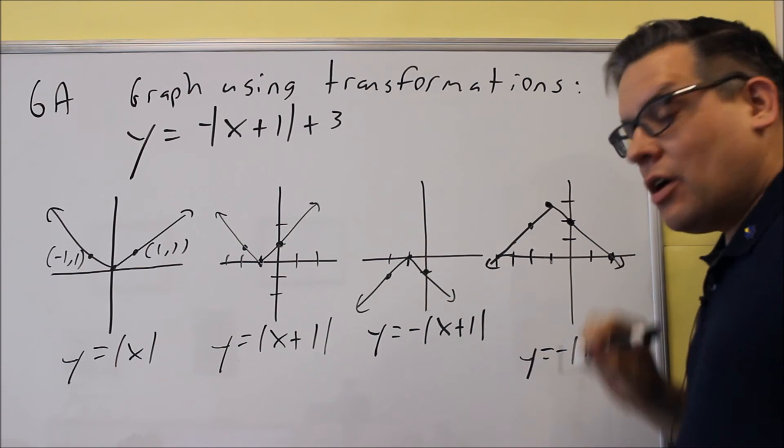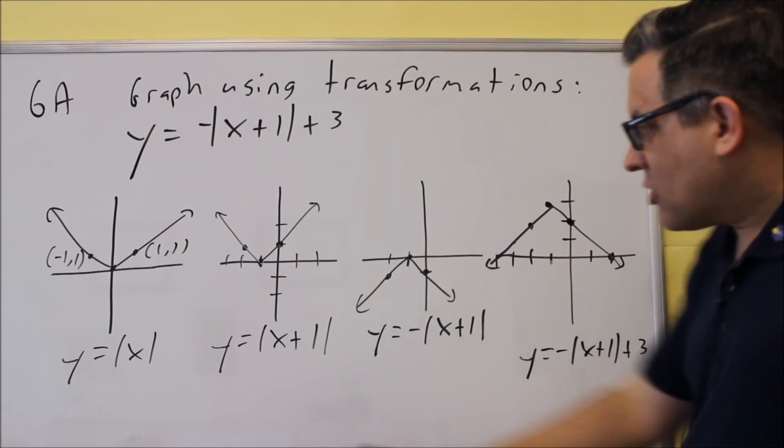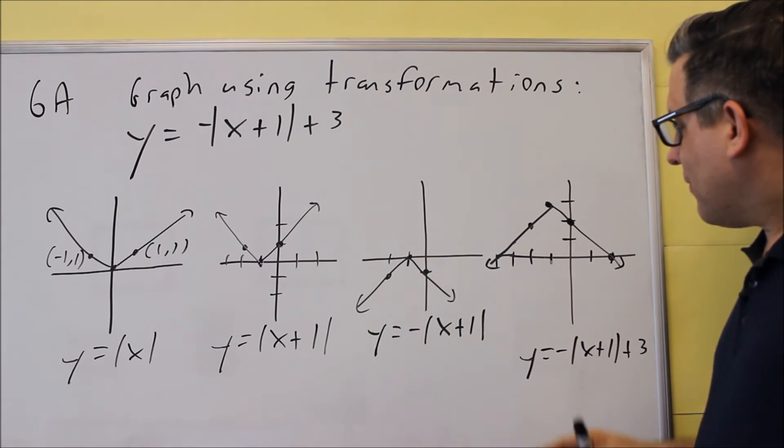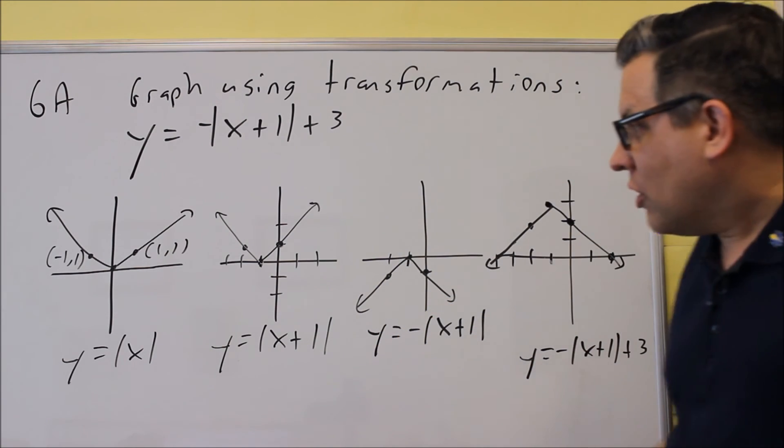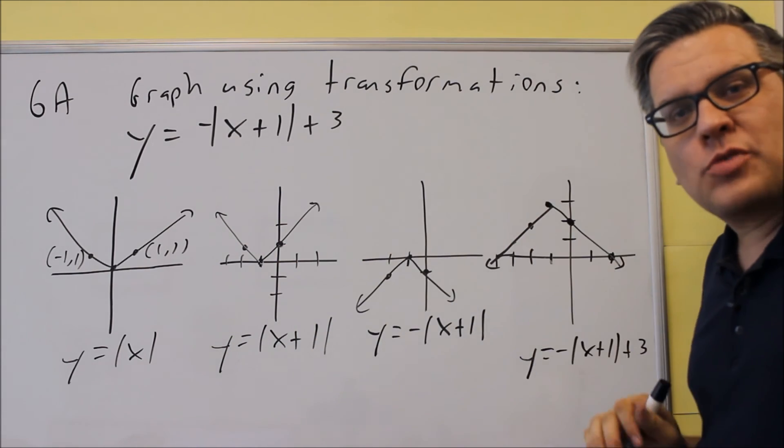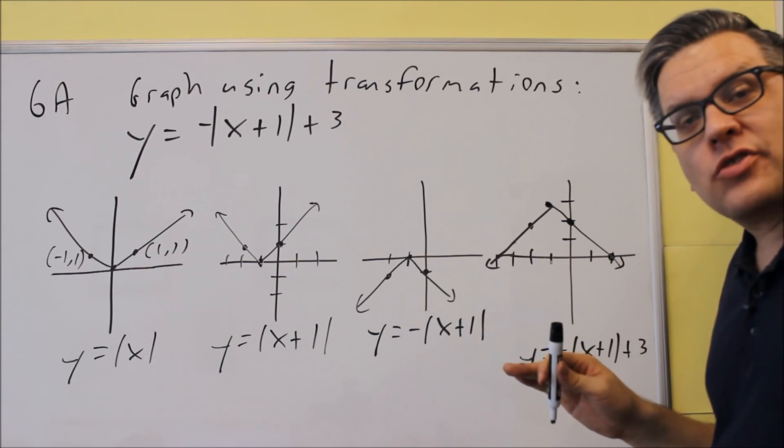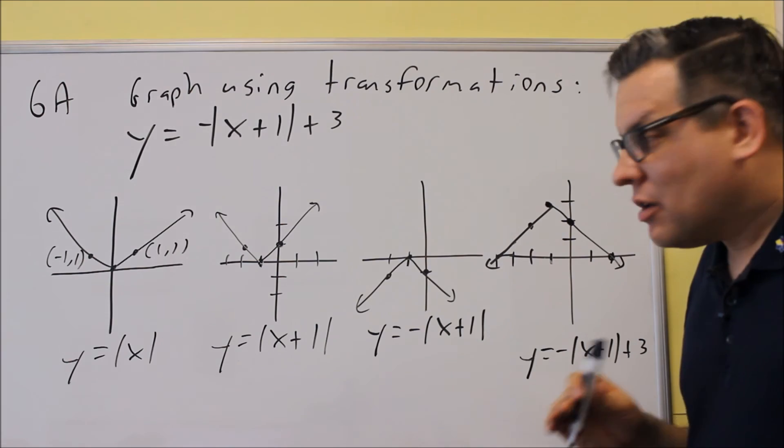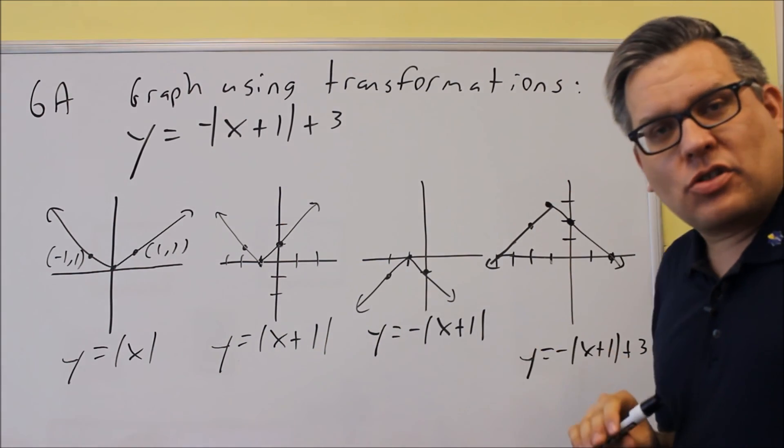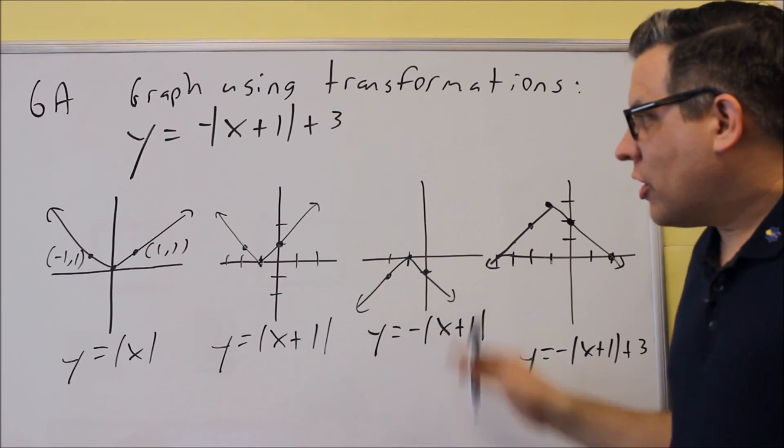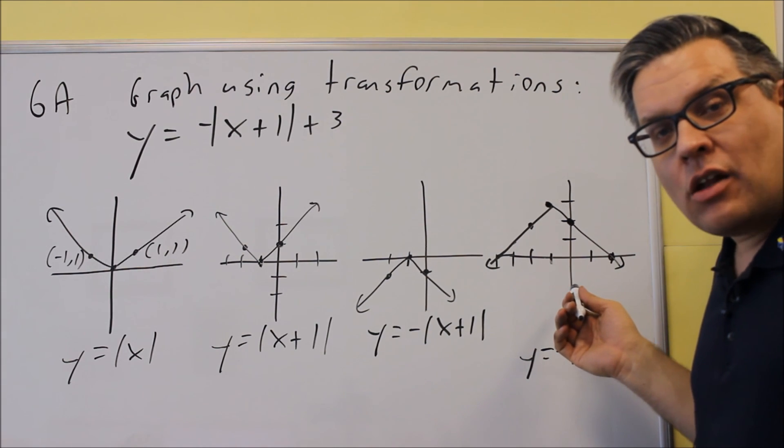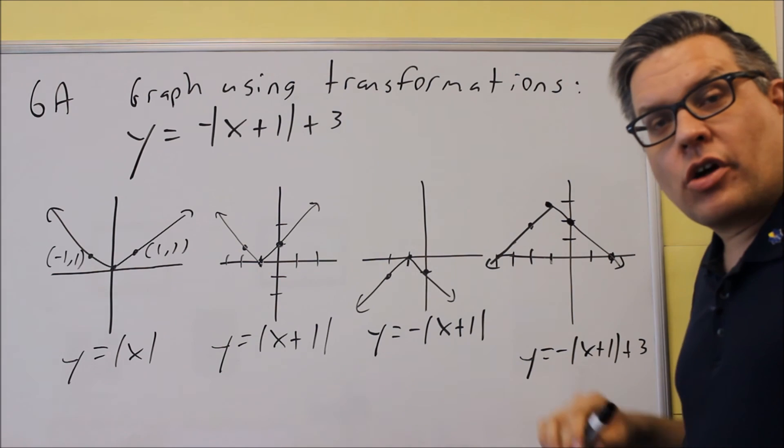So this would be what your final graph is going to look like. We started with the base graph, moved it 1 to the left, then flipped it upside down, and then raised it up by 3. You'll have to do the same thing on the test. There's going to be multiple grids provided for you. On this particular question, there were four grids because there are four different movements. The order might be different, in fact I did this a little bit different than what you're going to see in the key. But we ended up arriving at the same answer. Now we'll take a look at another example next. Thank you very much.